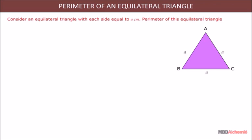Perimeter of this equilateral triangle is equal to AB plus BC plus CA equals to A plus A plus A equals to 3A centimeter.